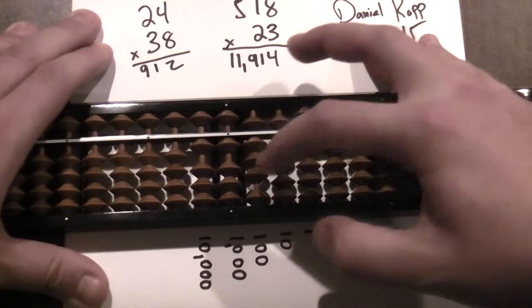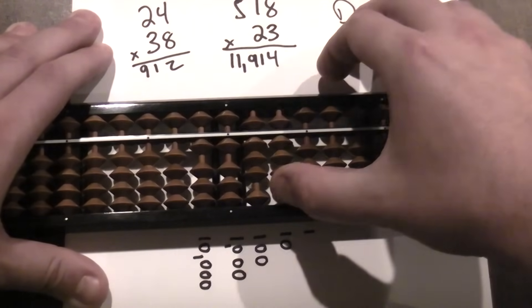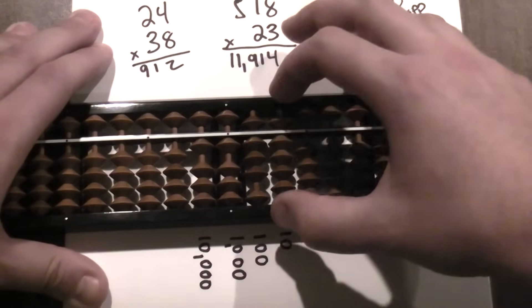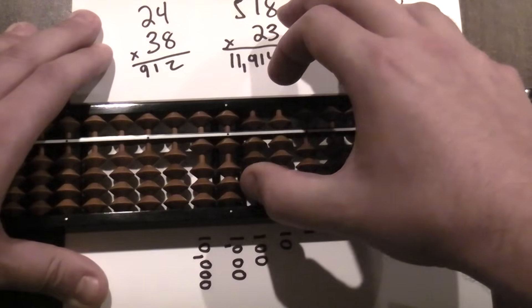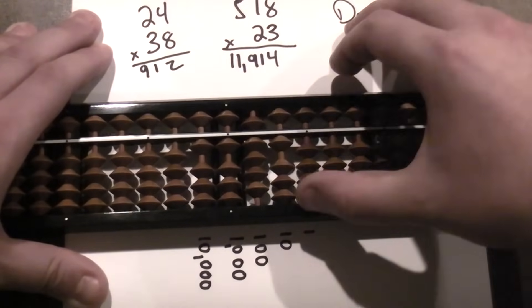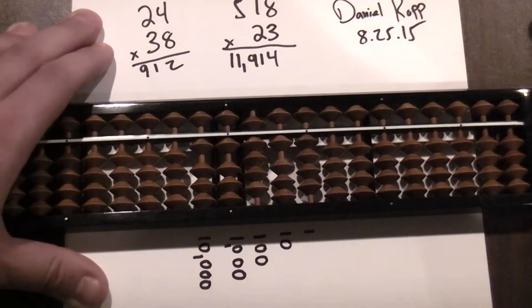And three times eight is twenty-four. I can't add two here. So I'll add ten over here. I'll subtract eight from here and add four.